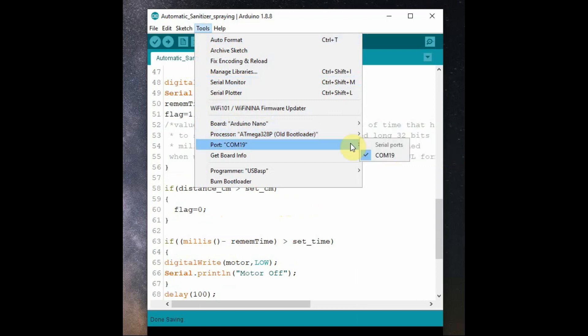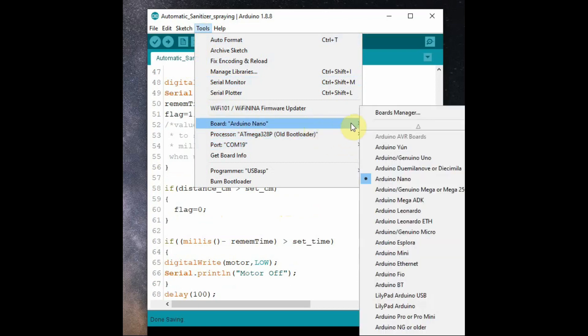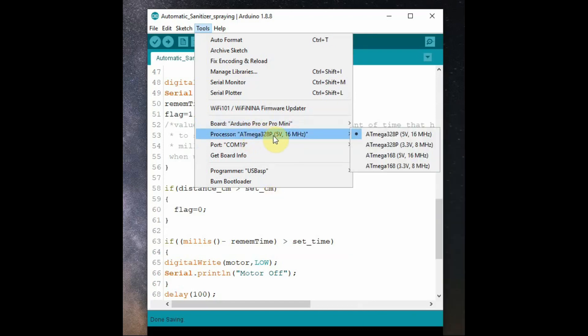You have to select the old bootloader for uploading code to Arduino Nano. If you don't see the old bootloader you can select Arduino Pro Mini as the bootloader of Pro Mini and Arduino Nano both are same.